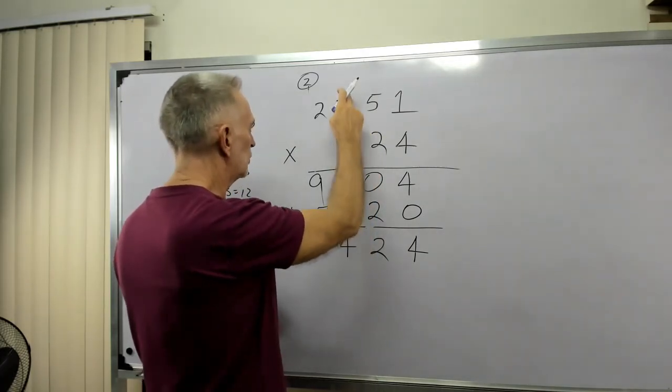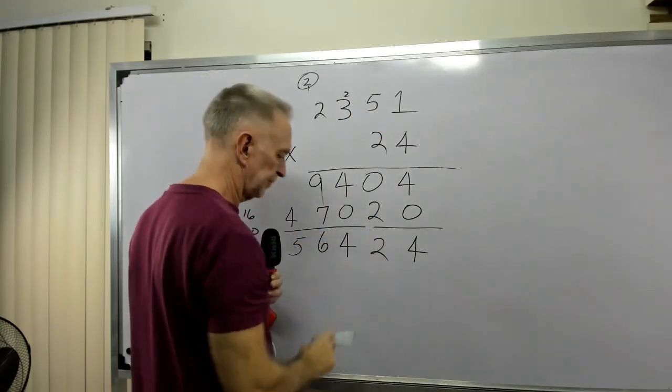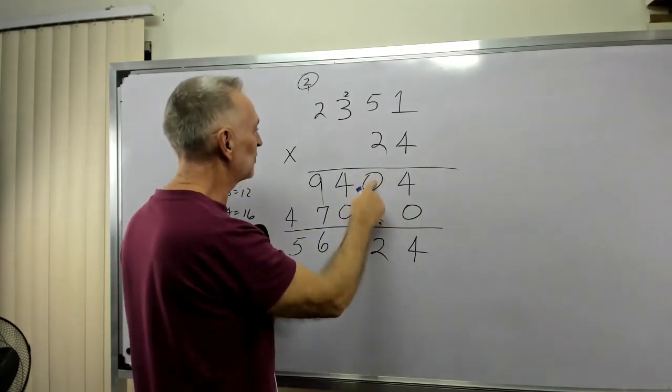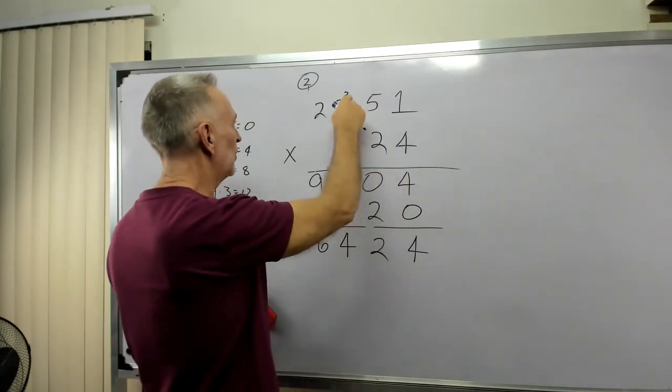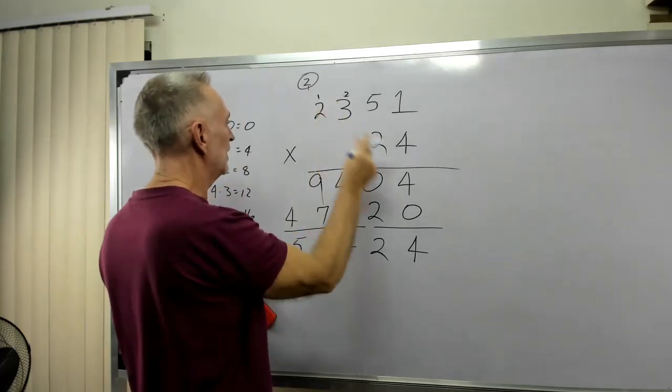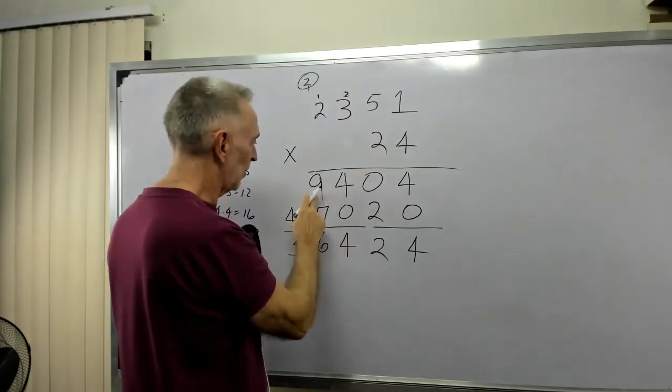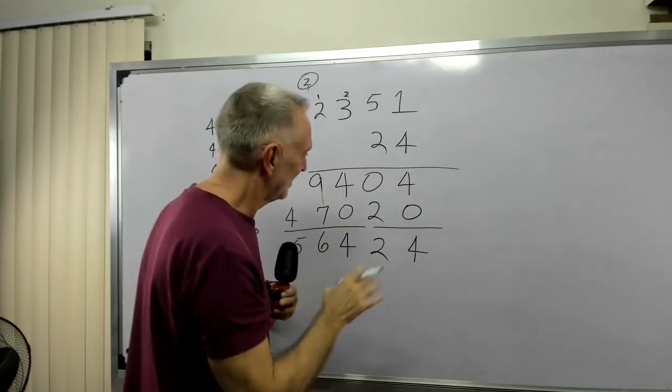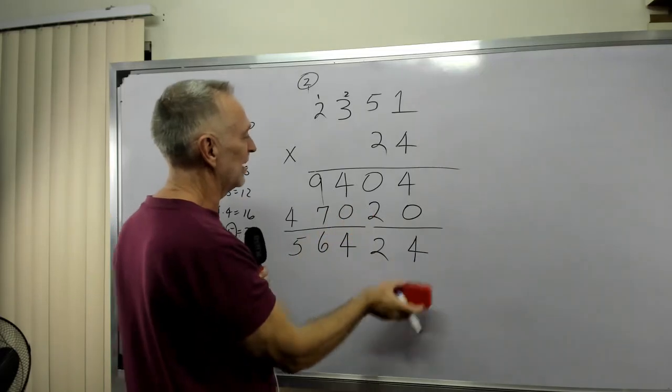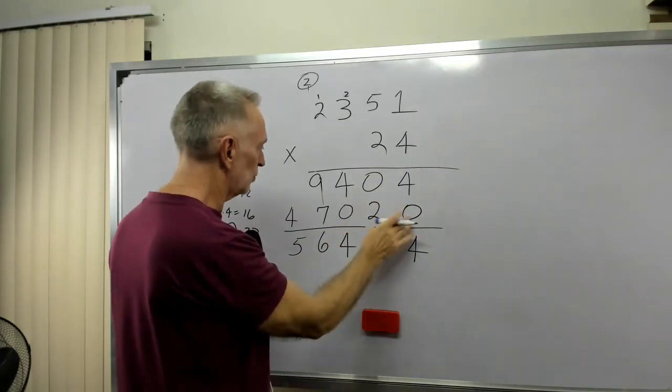Okay, 2 times 3 is 6. Sorry. 4 times 1 is 4. 4 times 5 is 20. 4 times 3 is 12. With the 2 would give me the 14. 4 times 2 is 8. Plus 1 is 9. See, we all can mess up. I mess up from time to time.